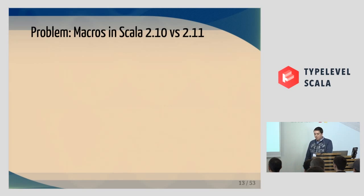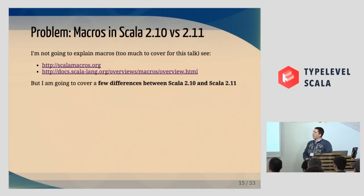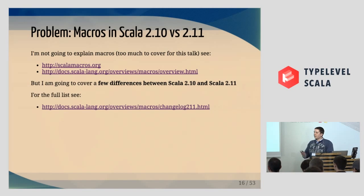So the problem domain that MacroCompat deals with is macros. Now I am not actually going to talk about macros because there is way too much to cover in 15 minutes. These are a couple of links that you can start with. I am going to somewhat assume people have at least some understanding of what macros do and how you use them. But what I am going to talk about is the differences between macros in Scala 2.10 and 2.11.